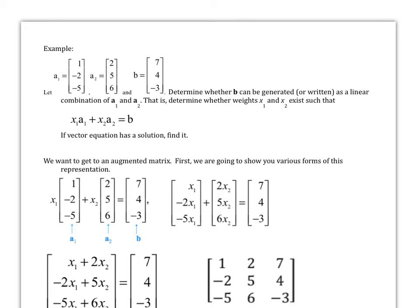Okay, so let's look at this example. We have these three vectors, a1, a2, and then b. Determine whether b can be generated as a linear combination of a1 and a2. That is, determine whether weights x1, x2 exist such that this equation will hold true. And then if the vector equation has a solution, find it. So what's going to happen is that we're just going to represent this in many different ways, but it's going to be the same exact thing. And our goal is to try to get it to be an augmented matrix. So we have these vectors here.